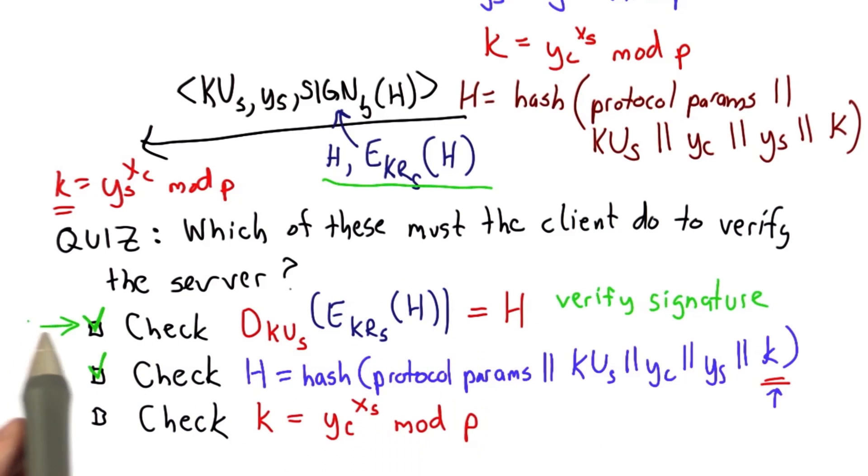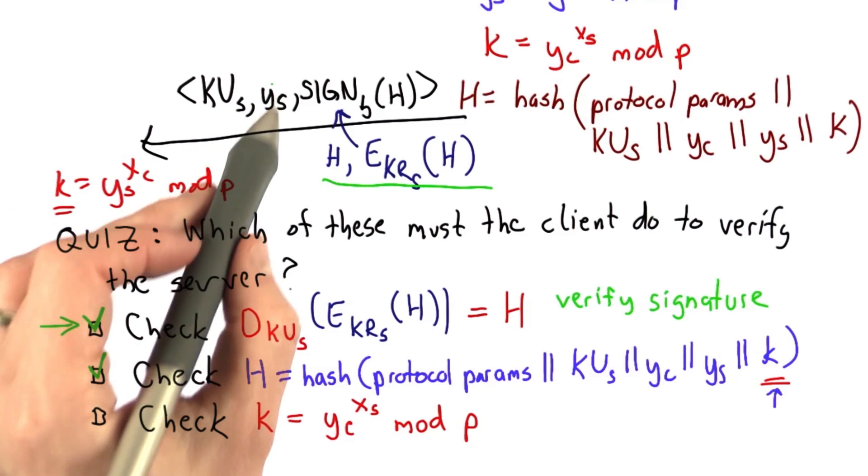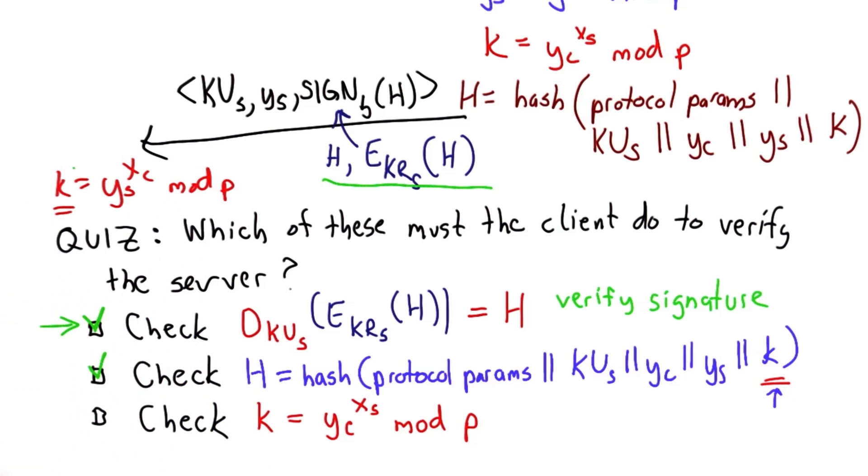And you might think that would be enough. We've verified the signature, we've obtained the public key, and we've obtained the value that we need to produce our Diffie-Hellman key. The reason that's not enough is because we're also worried about replay attacks, and that's why we need to do the second check.